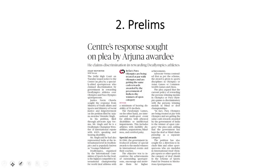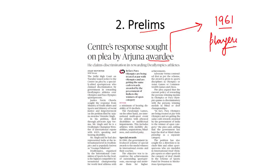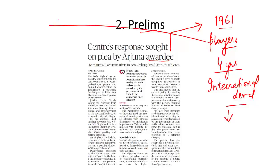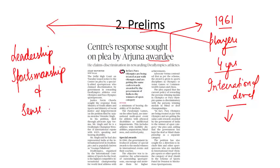On page 2, relevant for prelims, a news item covers a Centre's response sought on a plea by an Arjuna awardee claiming discrimination. Arjuna Awards were initiated in 1961 and are given to players who have exhibited consistently good performance at the international level for the past 4 years. The awardee should also have shown qualities of leadership, sportsmanship, and discipline.